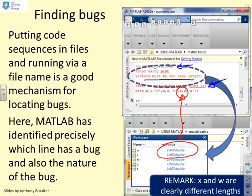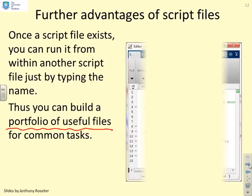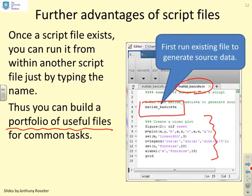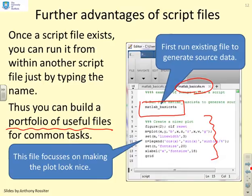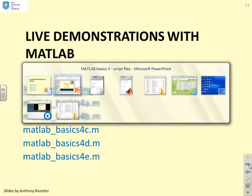Further advantages: once a script file exists you can run it from within another script file just by typing its name, and here you can see where large efficiencies start to build up. You can build a portfolio of useful files for common tasks. As an example, one file is used to generate data just by typing its name, and then the second file — 'basics4e' — is focused purely on plotting. So I've run an existing file to generate data, and the current file is just focused on making the plot look nice. I'll run some live demonstrations now.